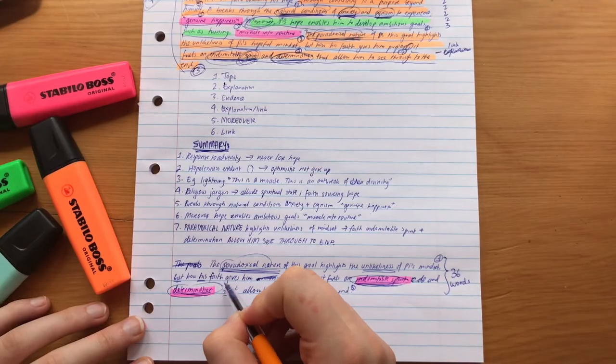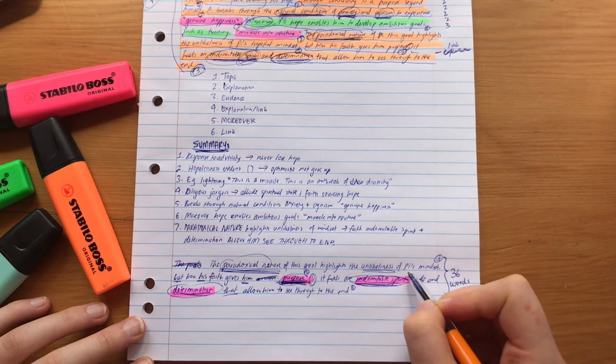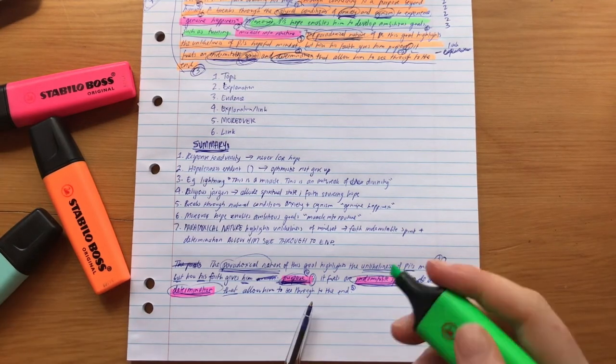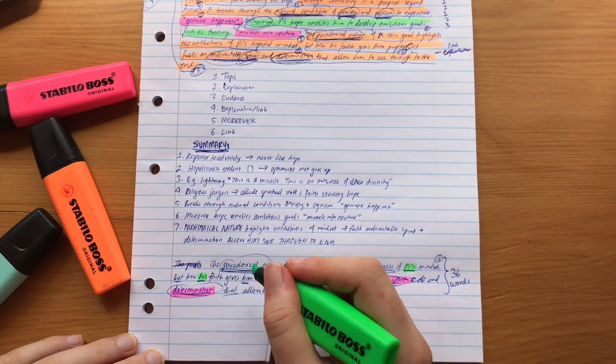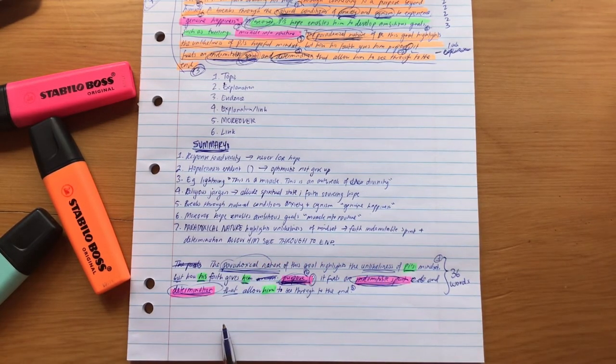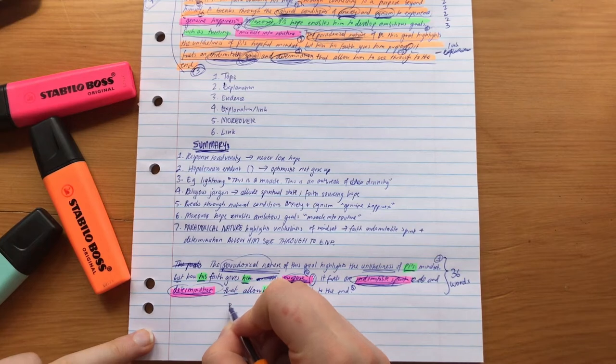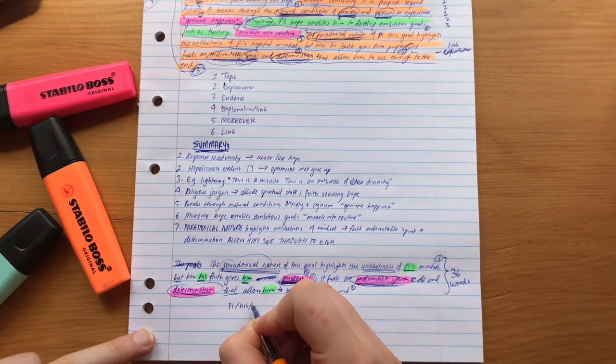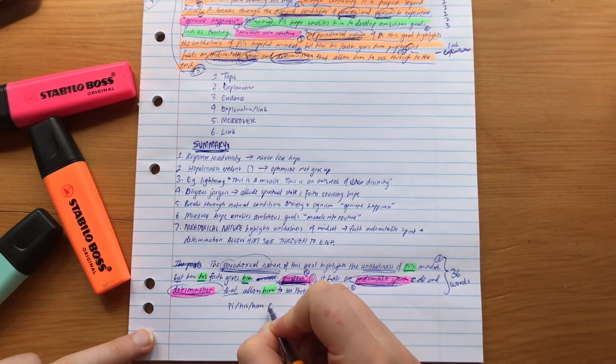Sometimes circling words that are the same or similar in a sentence can be useful. For example, remembering there's one time where a name is used then three pronouns his and him can help, acting like checkpoints in the sentence to remind you of parts of it. It's like you're filling in the gaps in between these similar words in order to obtain the whole line.